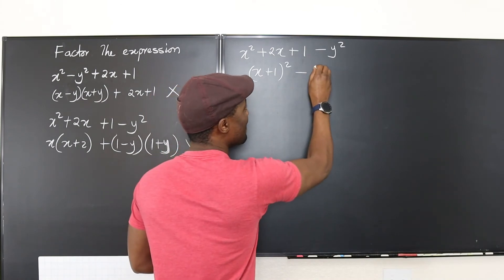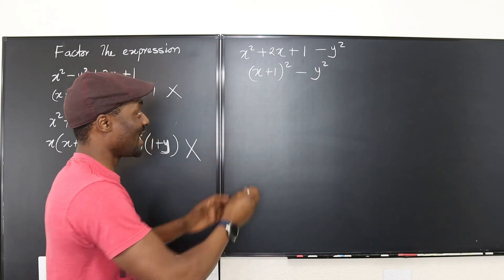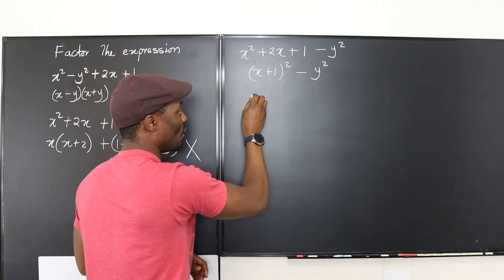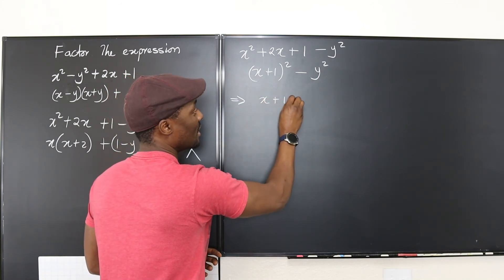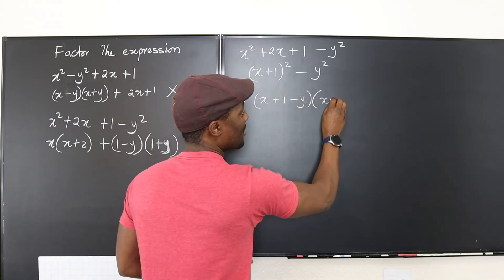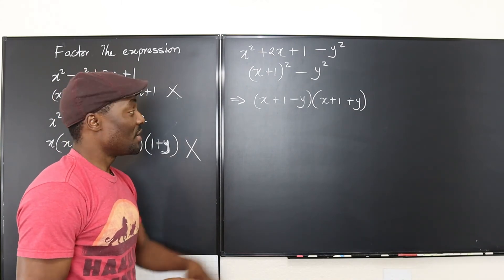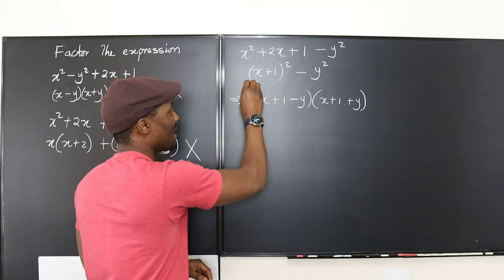Now this is difference of two squares, so my next line is gonna be (x + 1 - y)(x + 1 + y). That's our final expression. If you want to rearrange or change the position of this, that's your business, but that's your answer.